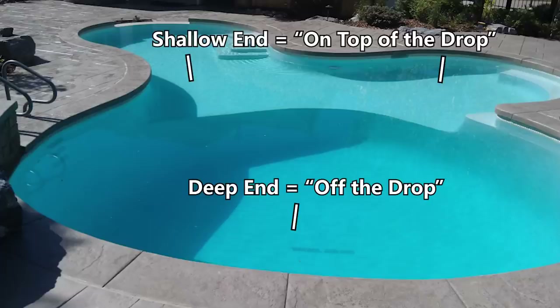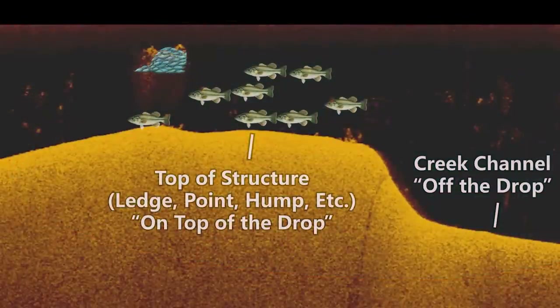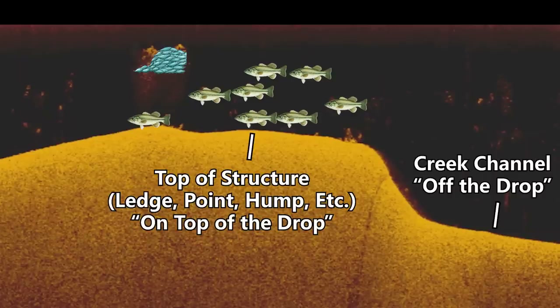This is the same for fish setting up on ledges. The deep end of the pool is the deep water — the channel or deeper water in general — and the shallow end is the top of a ledge, the top of a point, or the top of a drop-off. When these fish want to feed, it's a lot easier for them to ambush bait fish up on top of the drop than over the middle of the channel, because there's less water to deal with. So when I see bass positioned up on top of a ledge in the shallower water, that tells me they are looking to feed, waiting for bait fish, and they're a lot easier to catch.